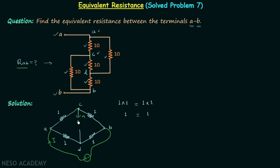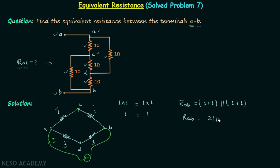Since the middle resistor carries no current, it does not contribute to the equivalent resistance and we can remove it. Now we have 2 resistors in series, then another 2 resistors in series, and those two branches are in parallel. So R_AB equals (1+1) parallel with (1+1), which is 2 parallel with 2, giving us 2×2 divided by 2+2, which equals 1 ohm. From here we also get a very useful shortcut.